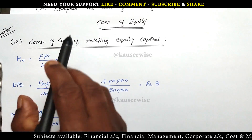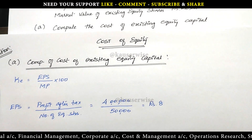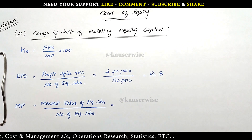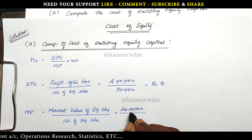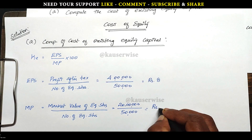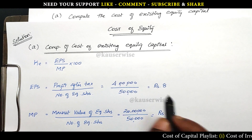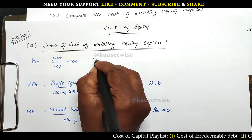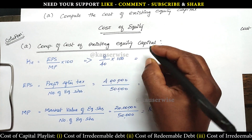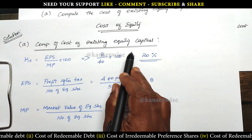Second component: market price per share. The formula is market value of shares divided by number of equity shares. Market value of existing equity shares is 20 lakhs, divided by 50,000 shares, giving us rupees 40. So market price per share is 40 rupees and EPS is 8 rupees. Substituting into the formula: EPS 8 rupees divided by market price 40 rupees, into 100, gives 20 percent. So the cost of existing equity capital is 20 percent.